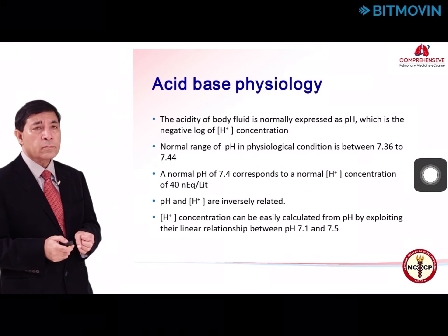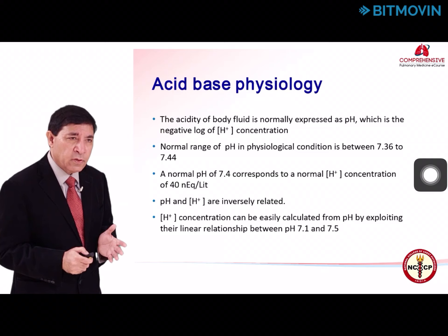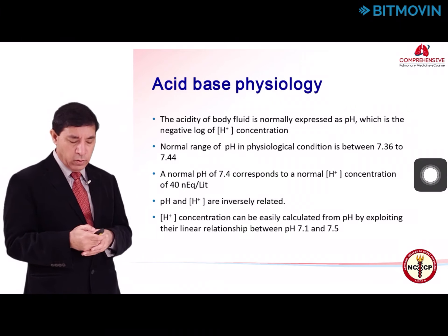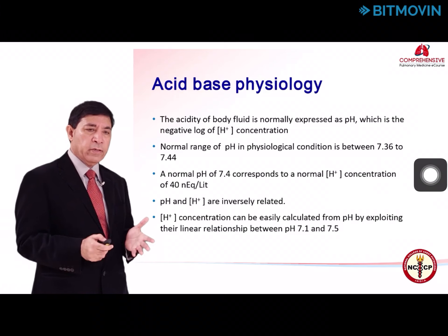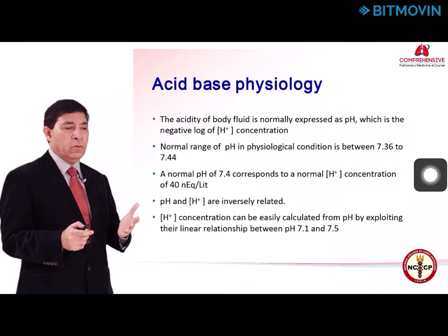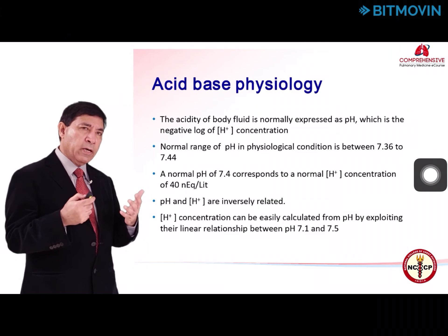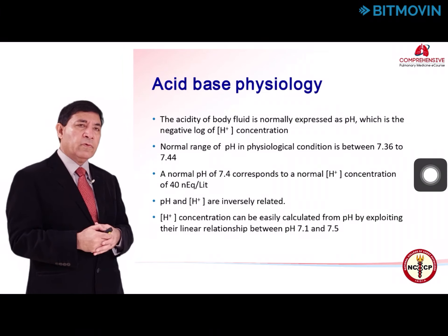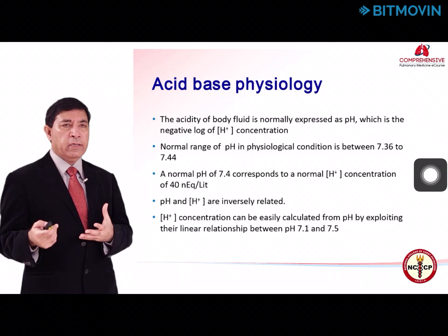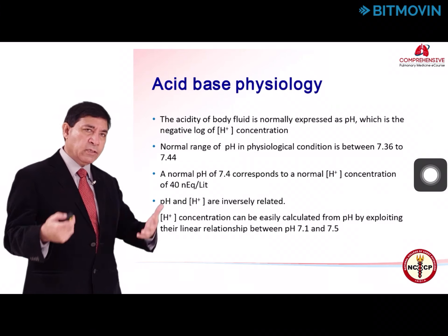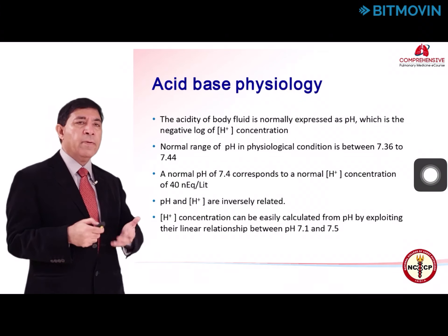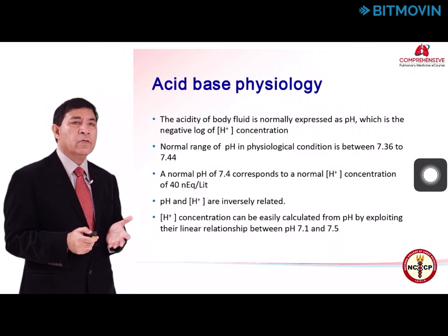Before going into the exact interpretation of an acid-base disorder, it is very important to understand basic acid-base physiology. The acidity of body fluid is expressed normally by pH. Although acidity is determined by hydrogen ion concentration, the concentration is so small that it is difficult to express in nanoequivalents per liter. So to express it in more easily understandable terms, we express acidity by pH, which is the negative logarithm of hydrogen ion concentration.